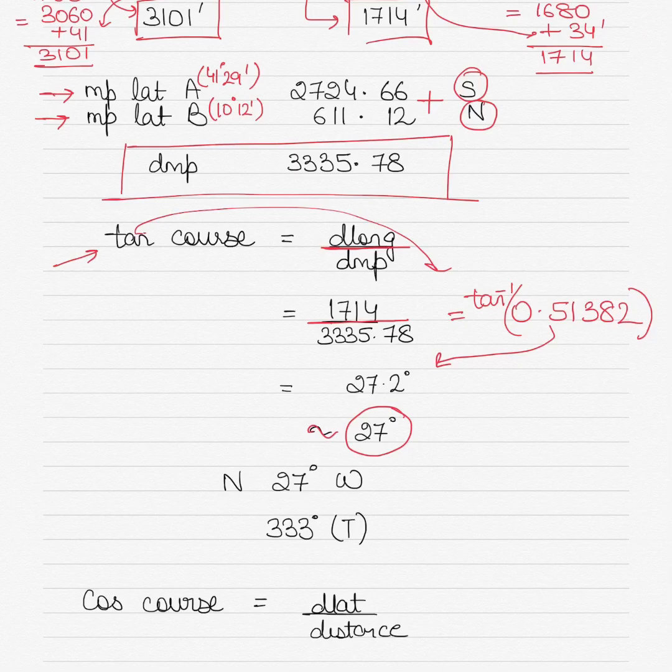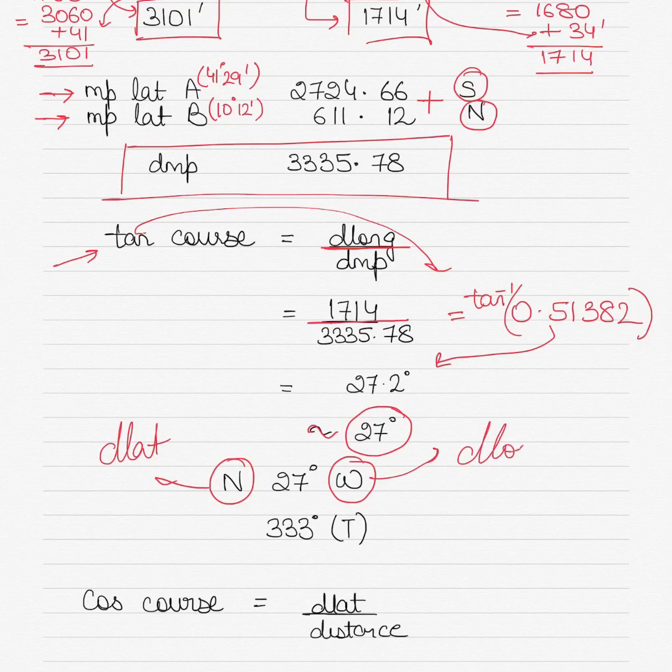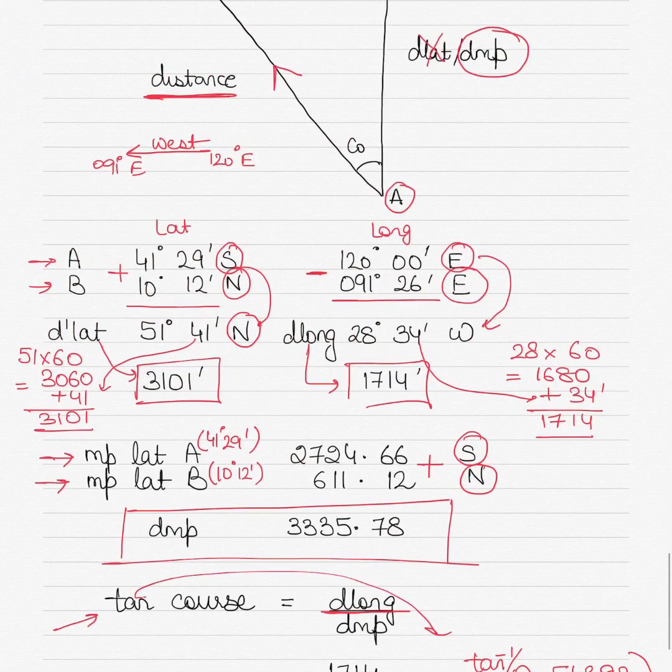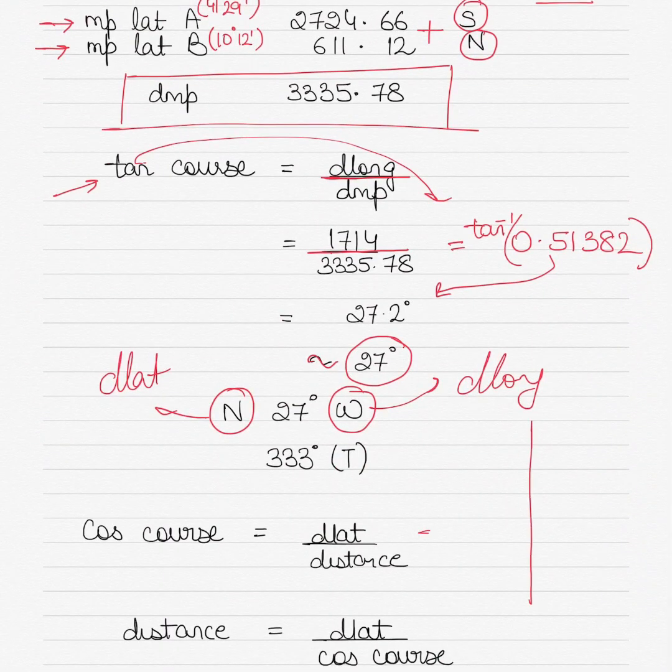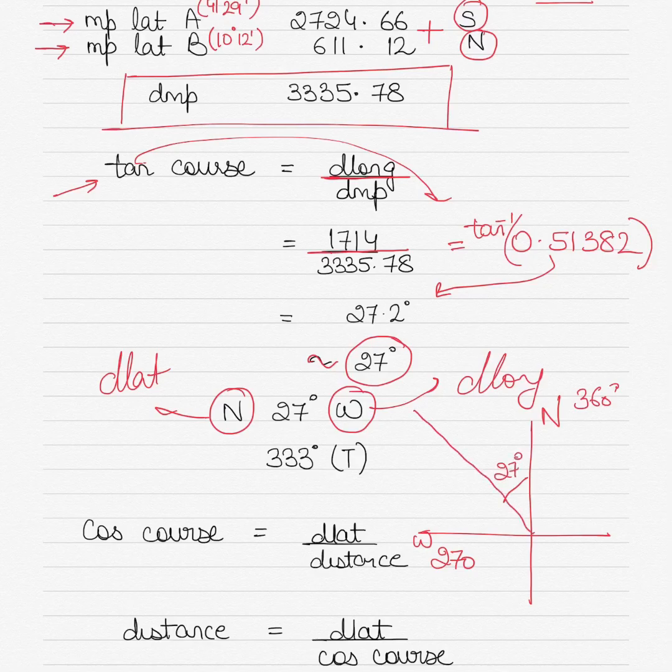So once you got 27 degrees, put the value north and west here. Where did I get the north and west from? North I got from my D lat, west I got from my D long. Also corresponds in the figure above. I am going in a northwest direction, right? So north 27 west would mean this is north, this is west. This is 270, this is 360. North 27 west would be somewhere here. So I am going down from 360, so 360 minus 27 would give me